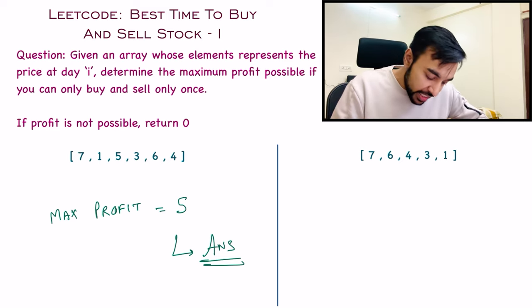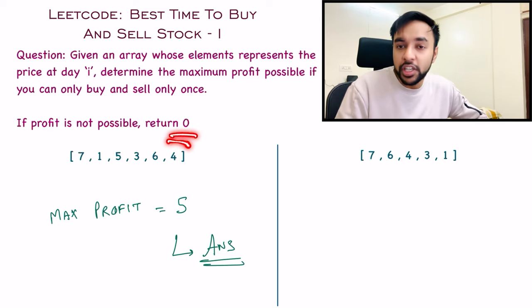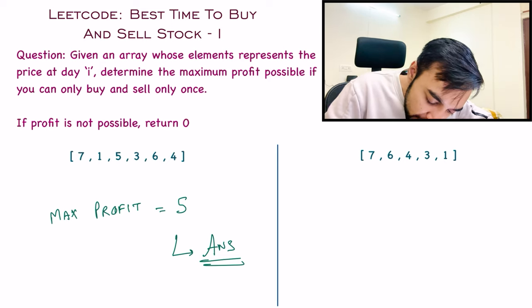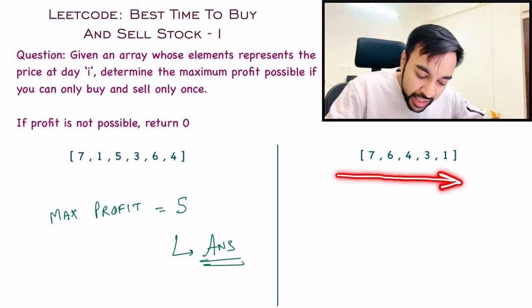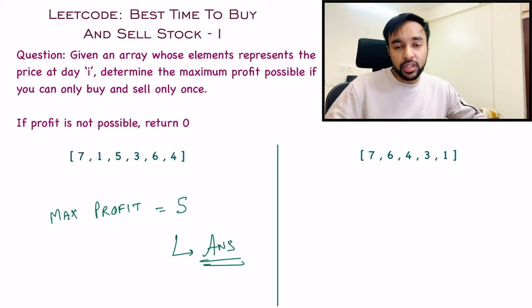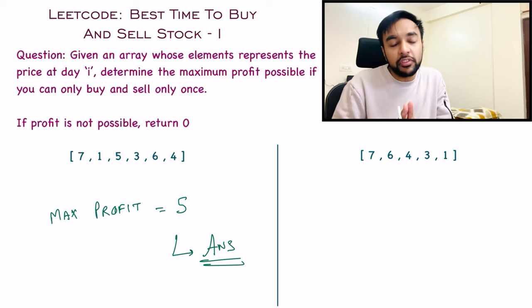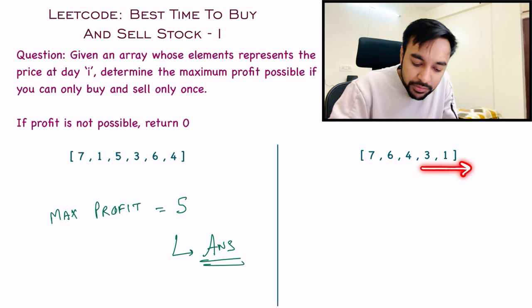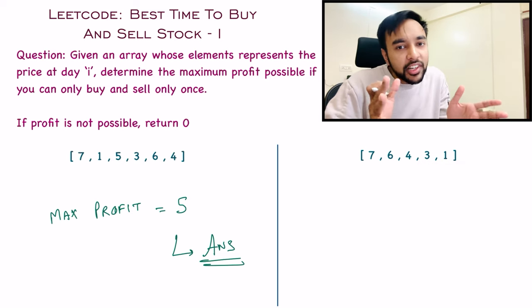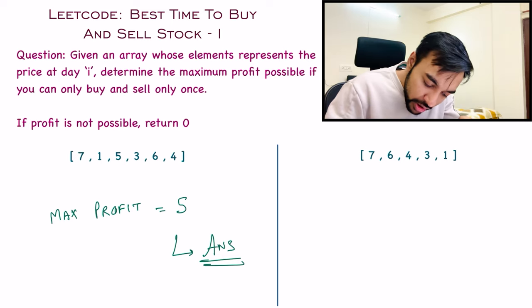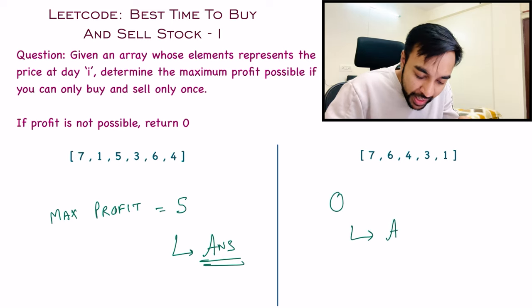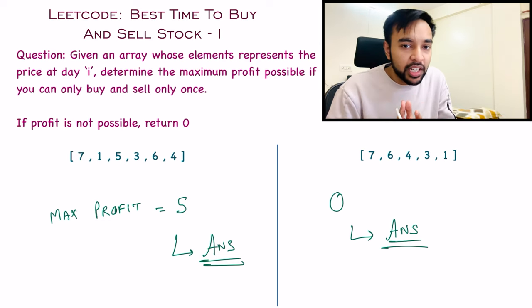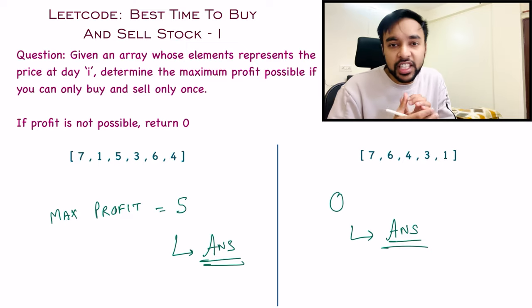There is one more special case: if no profit is possible, then you have to return 0. For example, in test case number 2, as soon as you buy a stock at any day and move ahead, the price just keeps going down. Suppose you buy the stock at price 4 — when you move ahead, the price becomes 3 and then 1, and both values will give you a loss. So in this scenario, the maximum profit will be 0. If you feel you have understood the problem statement, feel free to try it out, otherwise let us dive into the solution.